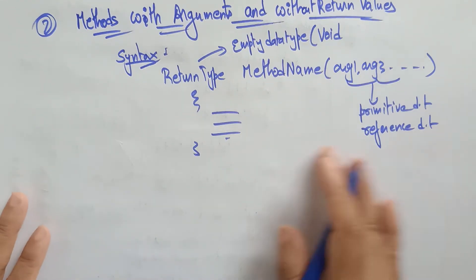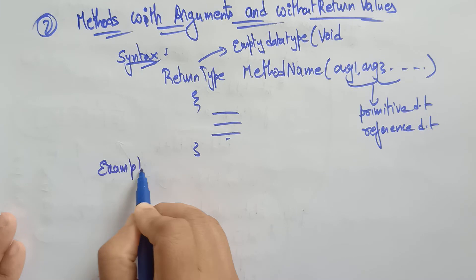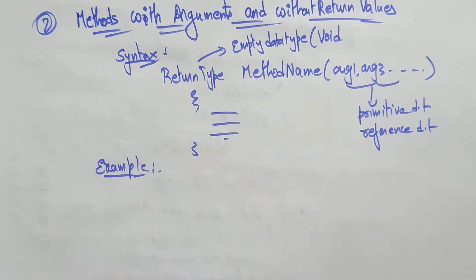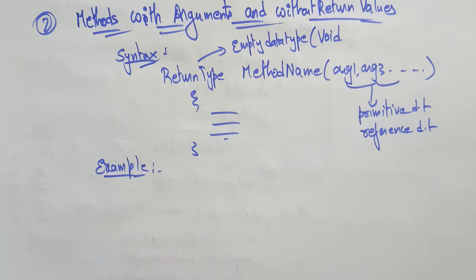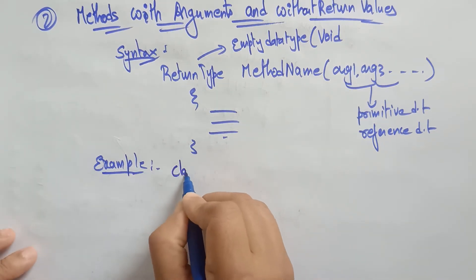Let me take an example to explain this. I'll explain one example here and one example in the IDE. In the IDE I'll type the program, compile it, and execute it to show how to use a method with arguments and without return values. First, let's see here with class Sample.